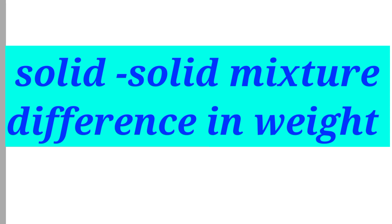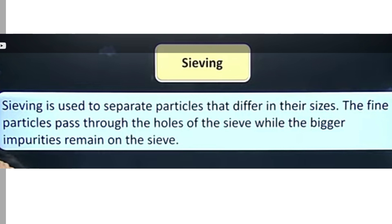The next method is sieving. Sieving is used when components of a mixture have different sizes. Sieving allows the fine flour particles to pass through the holes of the sieve while the bigger impurities remain on the sieve. This is the definition of sieving.